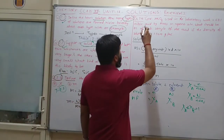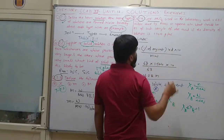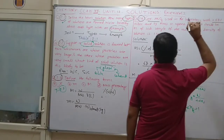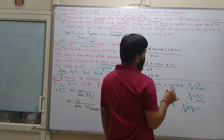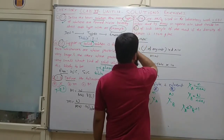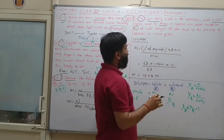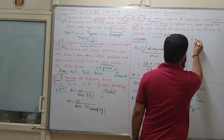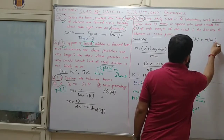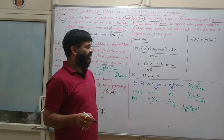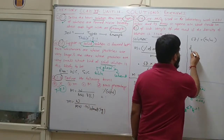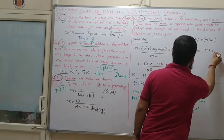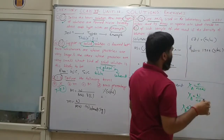Question 2.4: Concentrated nitric acid used in the laboratory is 68% by mass in aqueous solution. What should be the molarity of such a sample of acid if the density of the solution is 1.504 g/ml?